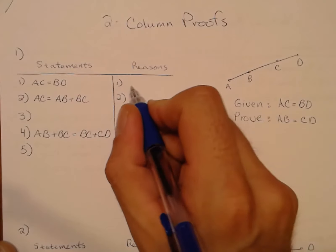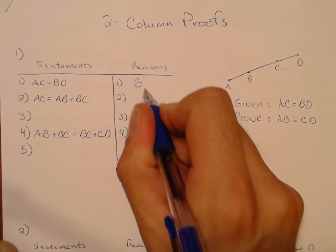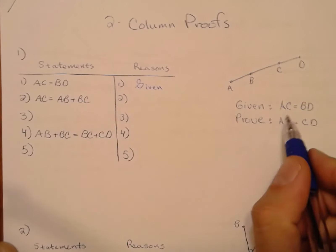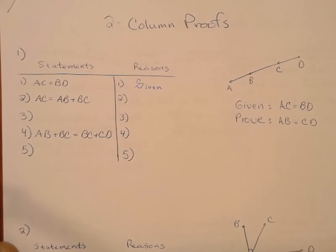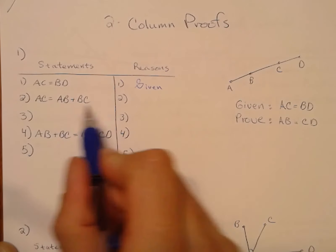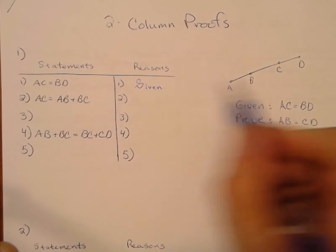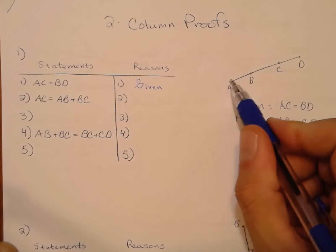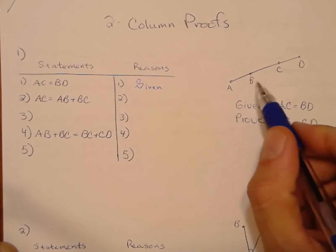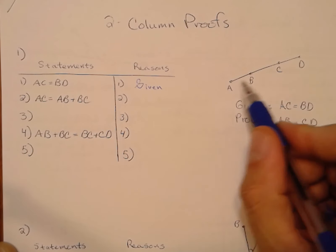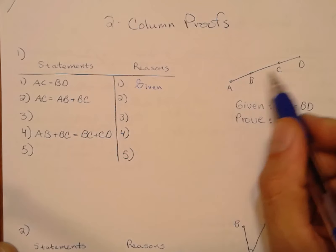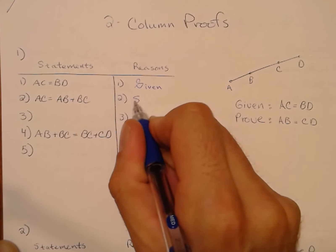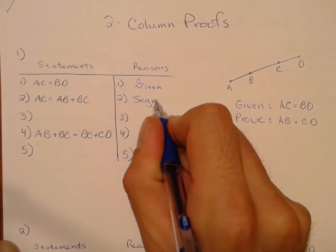The first reason will be 'given' — where did that statement come from? It was given. Now, AC is really AB plus BD. When the longer segment is made up of the two little segments added together, that is the Segment Addition Postulate.